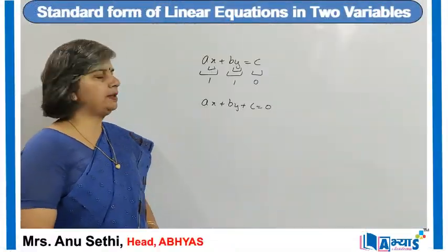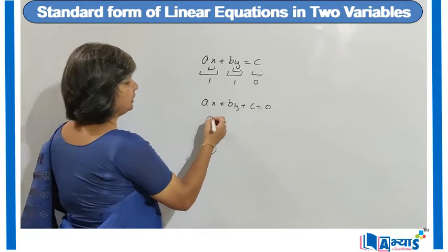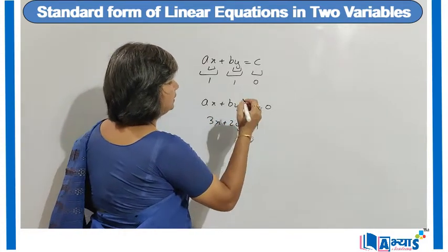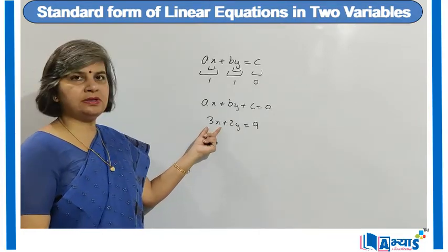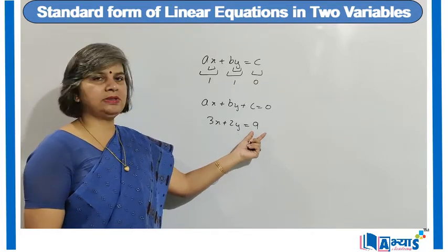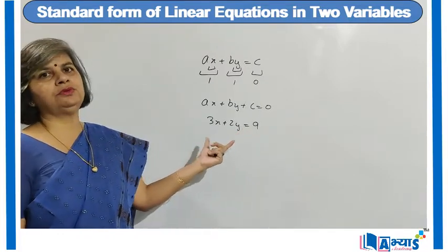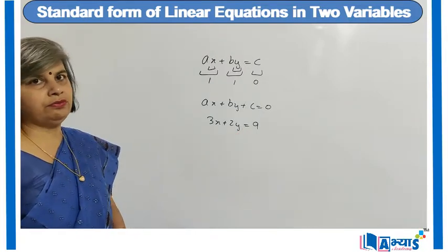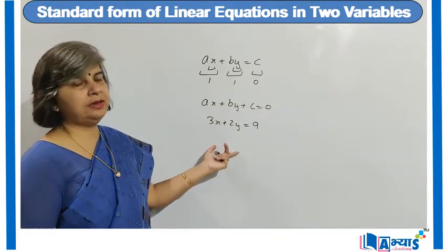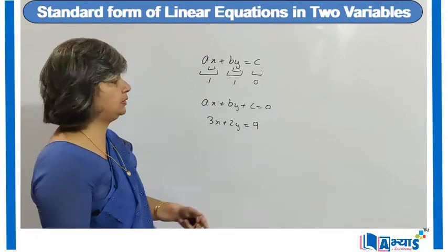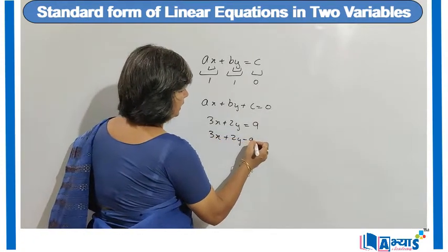Now let us apply the concept of standard form of a linear equation in 2 variables. Suppose we are given the equation 3x plus 2y is equal to 9. It is a linear equation — the highest degree is 1, it has 2 variables x and y, and it has an equal to sign. To convert it into standard form, we need 0 on the right hand side, so we bring 9 to the left hand side. It becomes 3x plus 2y minus 9 is equal to 0.